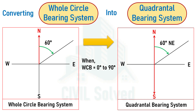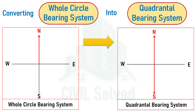To generalize: when a line has a bearing from 0° to 90° in the whole circle bearing system, the quadrantal bearing is simply written as N(WCB angle)E — you just write NE along with the bearing given in the WCB system.